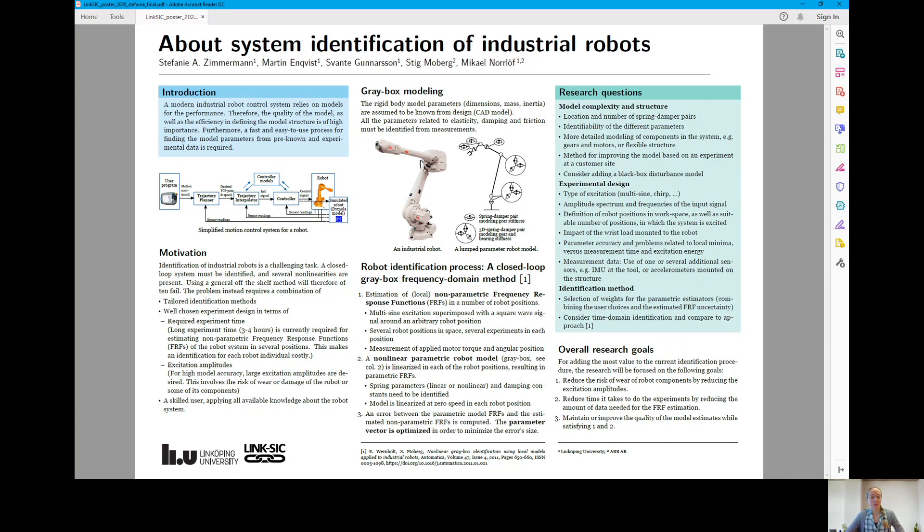And closely related to that is the question of identifiability of the different parameters. Are there, for example, certain parameters that turn out to not be needed for an accurate model? Or how many parameters are we actually able to properly identify?